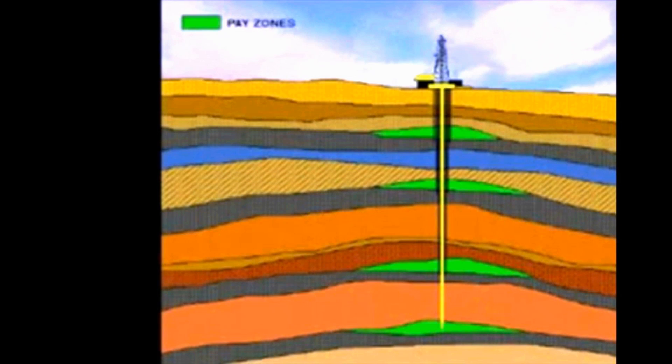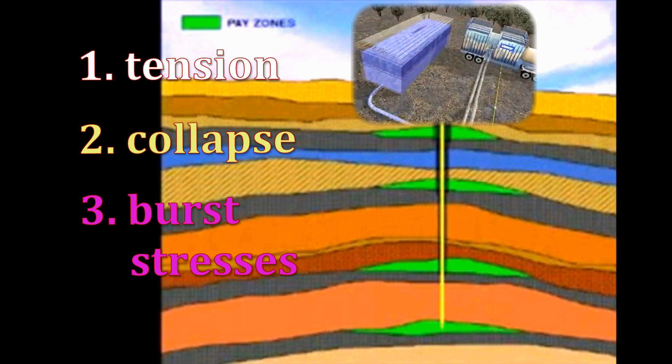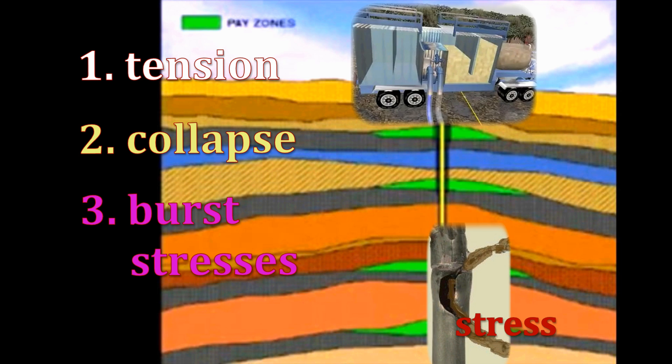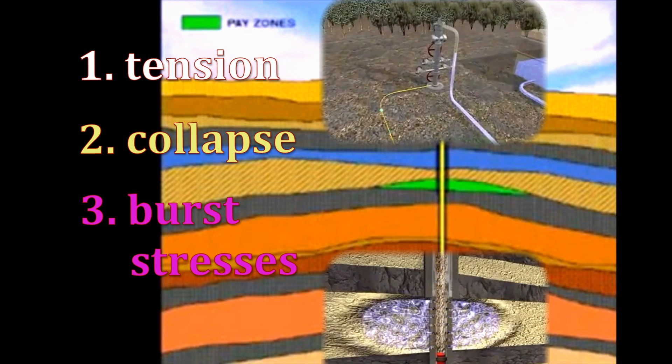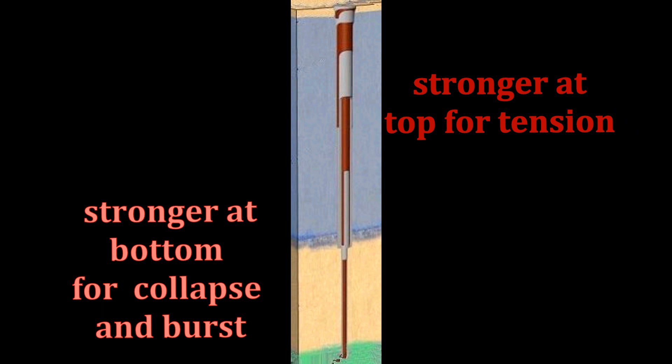Third are burst stresses. Like collapse, these stresses are concentrated at the bottom of the hole. The critical time for burst stress is in pumping operations at the beginning of a cement job and during a fracture treatment or stimulation. The entire string is designed to be stronger at the top for tension and at the bottom for collapse and burst.